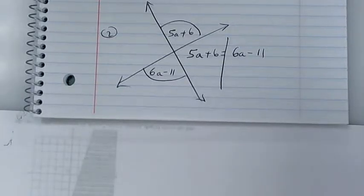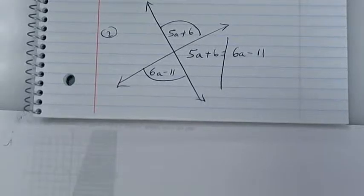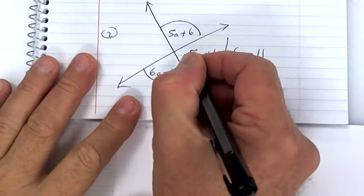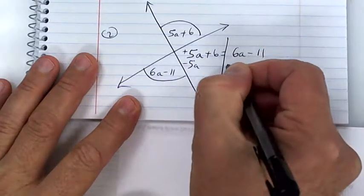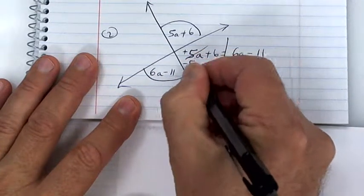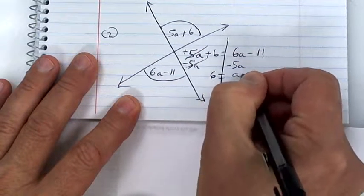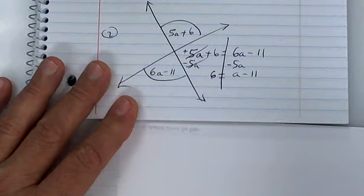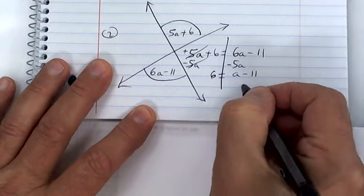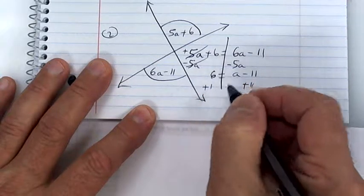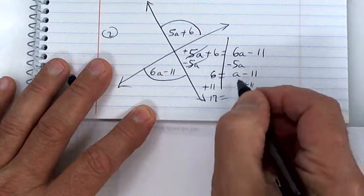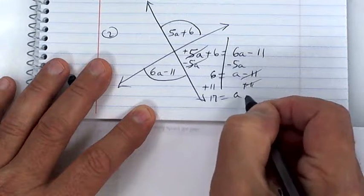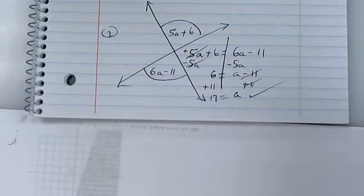Do I have more a's on the left or the right? You want to get rid of the smaller one, so subtract 5a from both sides. You get 6 = a − 11. Then add 11: 6 plus 11 is 17, so a = 17. Note: 6 minus 5 is 1a.